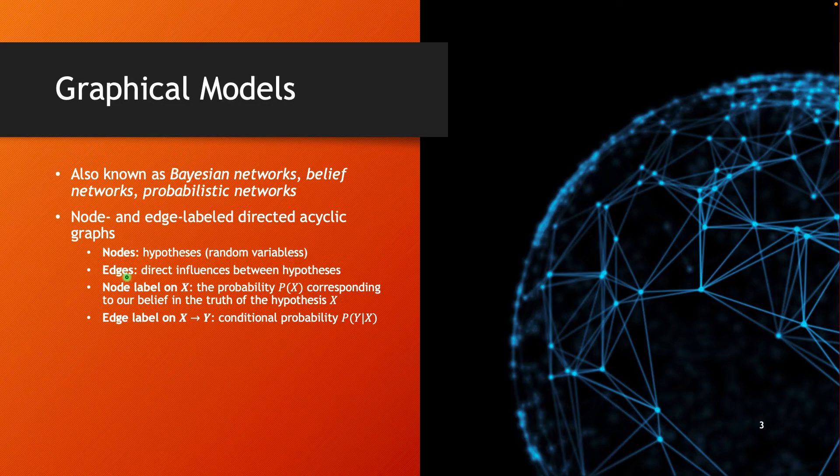Then we have the edges, and they represent the direct influences between the hypotheses. The node label on node x represents the probability p of x corresponding to our belief in the truth of this hypothesis x. The label on the edge from x to y corresponds to the conditional probability p of y given x.